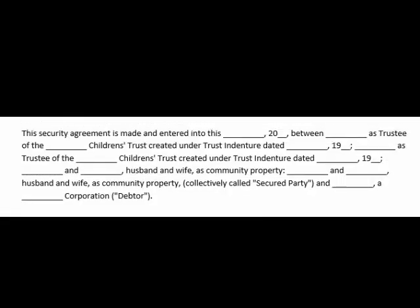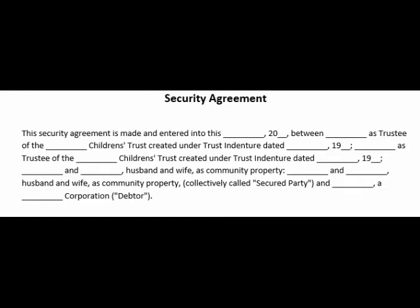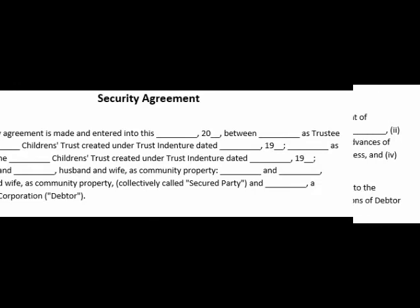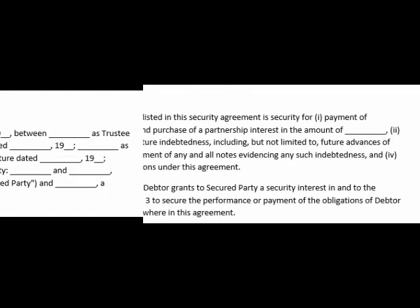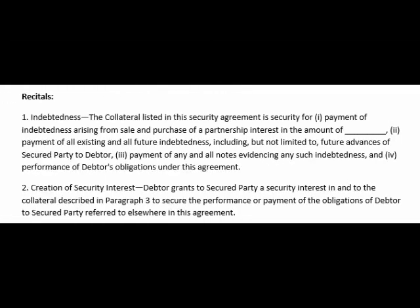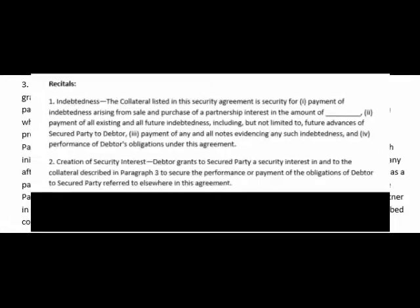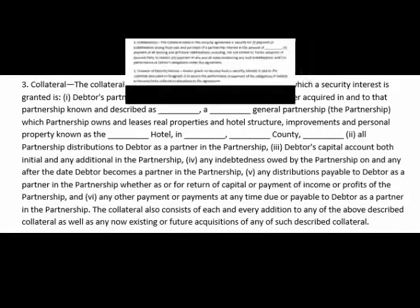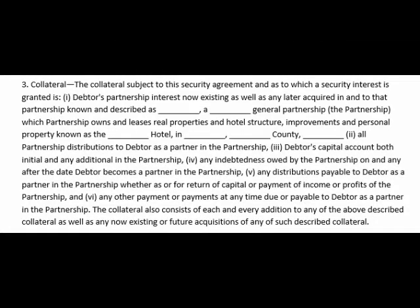Whenever a person borrows something or lends anything to someone, there is always a risk of damage and loss. To prevent this damage or loss, it is the best way to sign a security agreement. The security agreement is a legal document that saves the lender against any damage if it is done by the borrower.